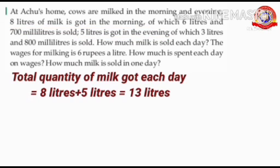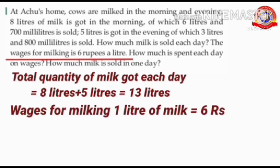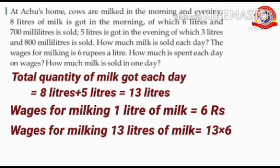Next, we have to find out the wages for milking. What do you mean by wages? Wages means payment for work. Here, the wages for milking is 6 rupees a liter. That is, wages for milking 1 liter of milk equals 6 rupees. Here, they got 13 liters of milk each day. So, we have to find out the wages for milking 13 liters of milk. That is, wages for milking 13 liters of milk equals 13 times 6.